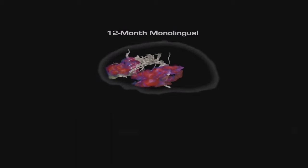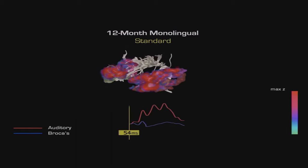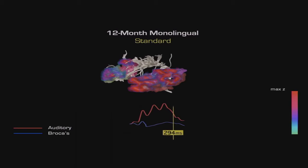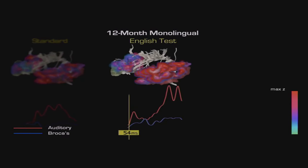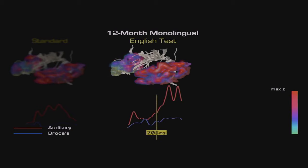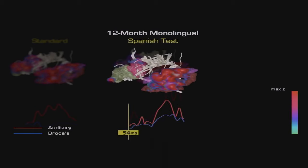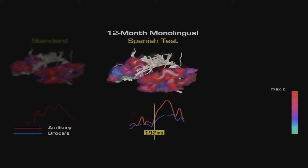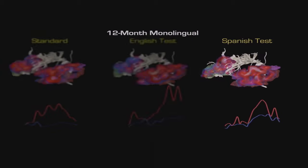What we see next are the red bubbles — MEG-recorded magnetic field changes representing neural firing to the standard sound, an English sound, that's our background. Here's our new English sound, and you see an increase in auditory firing. Then the contrasting language sound, which is by now a non-native sound for the 12-month-old. The surprise was that we had seen Broca's firing all along, simultaneous with auditory. The increase in Broca's to the non-native is very interesting.